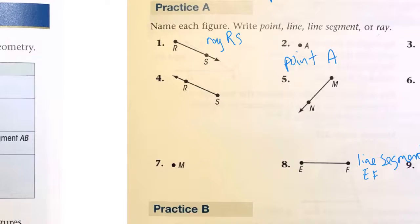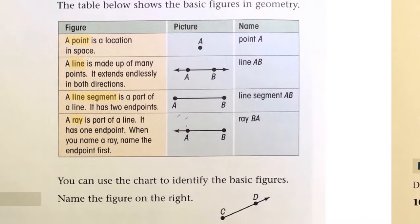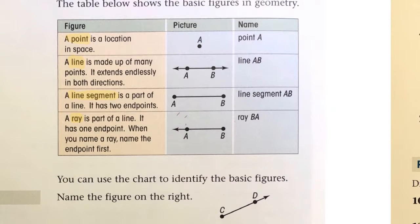Let's double check our table. We've got the line labeled with AB. The line segment labeled with AB. The rays get labeled with the endpoint first. And a point just gets its name, point A.